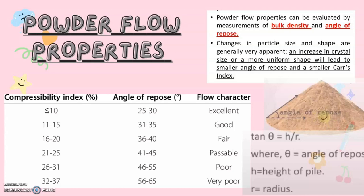Here is a table showing the flow character that is dependent on two parameters: Carr's index and angle of repose. For Carr's index 10 or less than 10, the angle of repose ranging from 25 to 30 degrees, we have flow character that is excellent. For Carr's index 11 to 15 percent and angle of repose 31 to 35 degrees, flow character will be good. For Carr's index 16 to 20 percent and angle of repose 36 to 40 degrees, flow will be fair and so on.